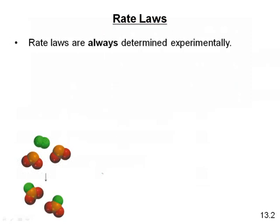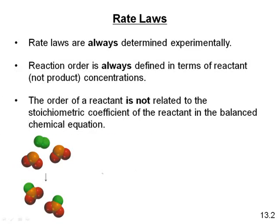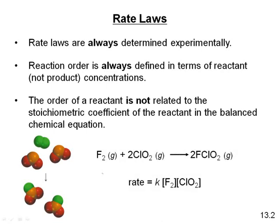Rate laws are always determined experimentally — run some reactions, change the concentration of one reactant, determine the effect on rate while keeping the other constant. The reaction order is always defined in terms of reactant concentrations; we don't use products because we're working with initial rates. Importantly, the order of the reactant is not related to the stoichiometric coefficient — they're not the same.